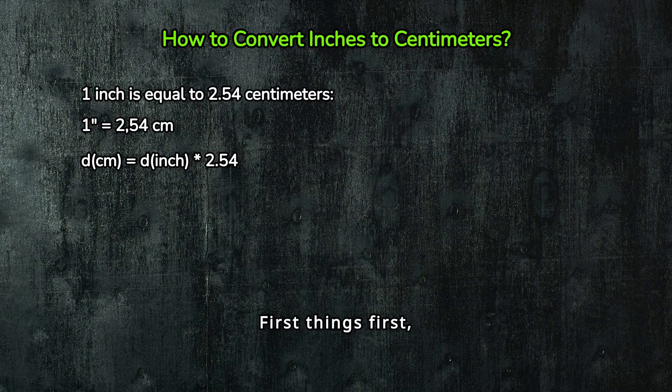First things first, let's talk about the basics. One inch is equal to 2.54 centimeters. That's the magic number you'll need to remember. So, how do you convert inches to centimeters? It's just a matter of multiplication. Let's break it down with a few examples.